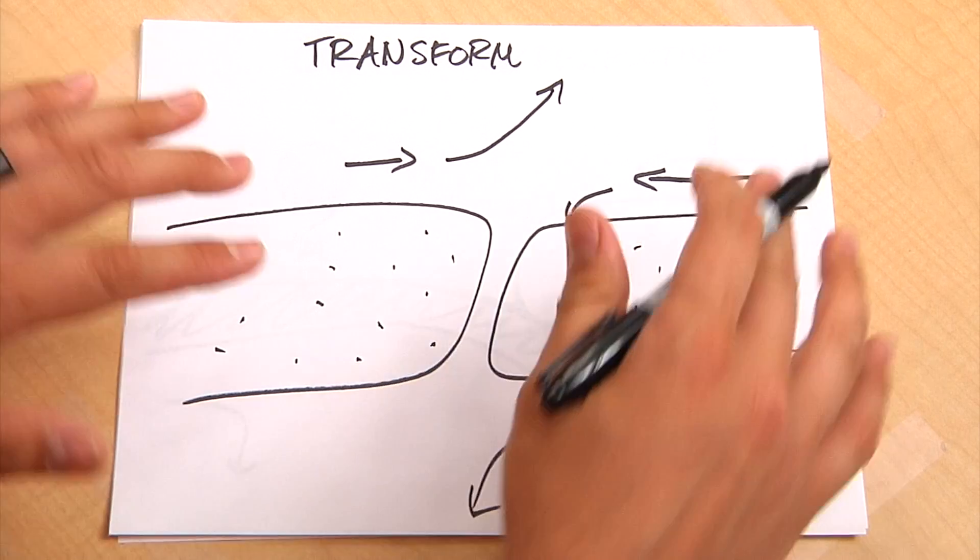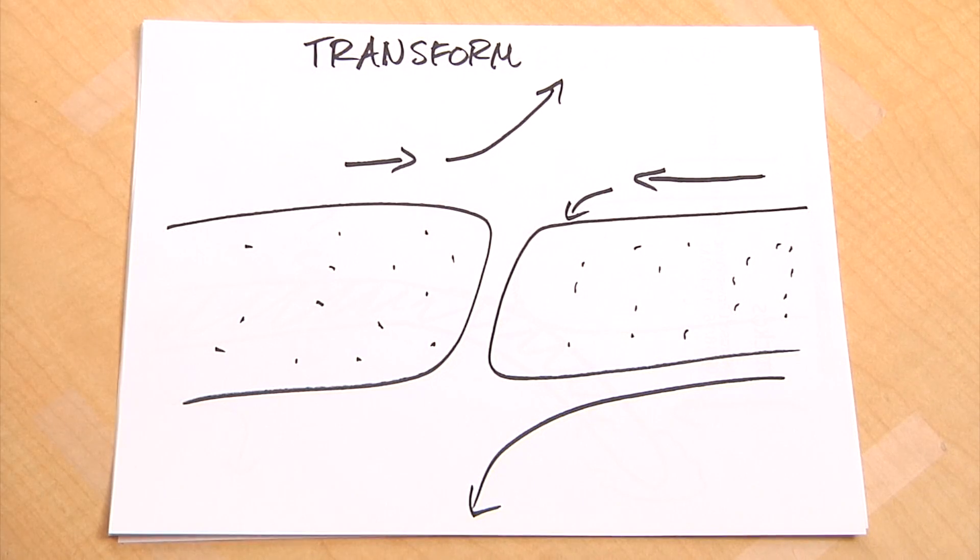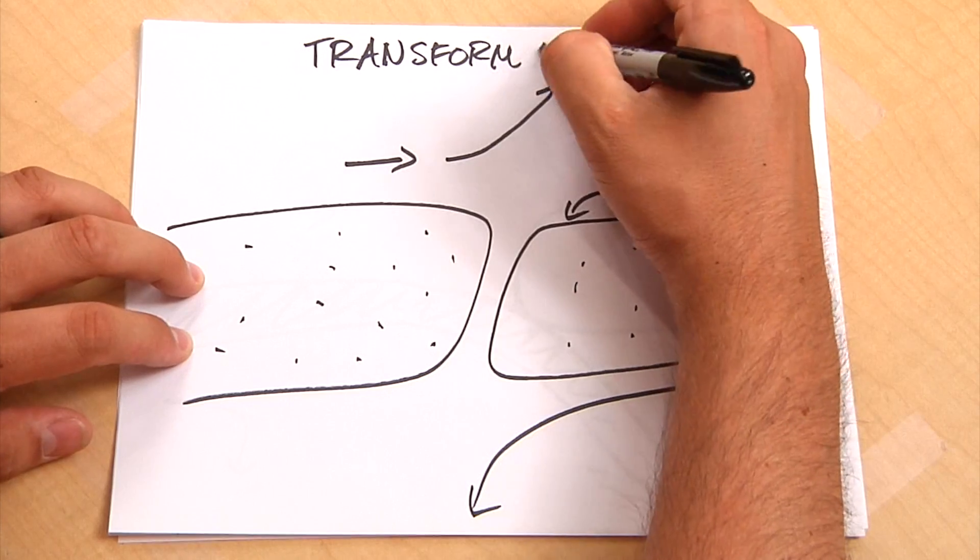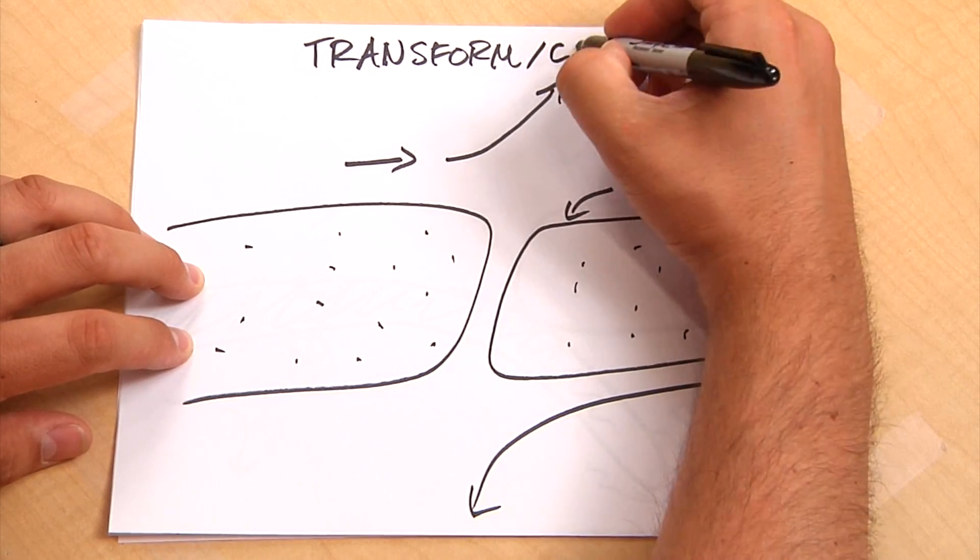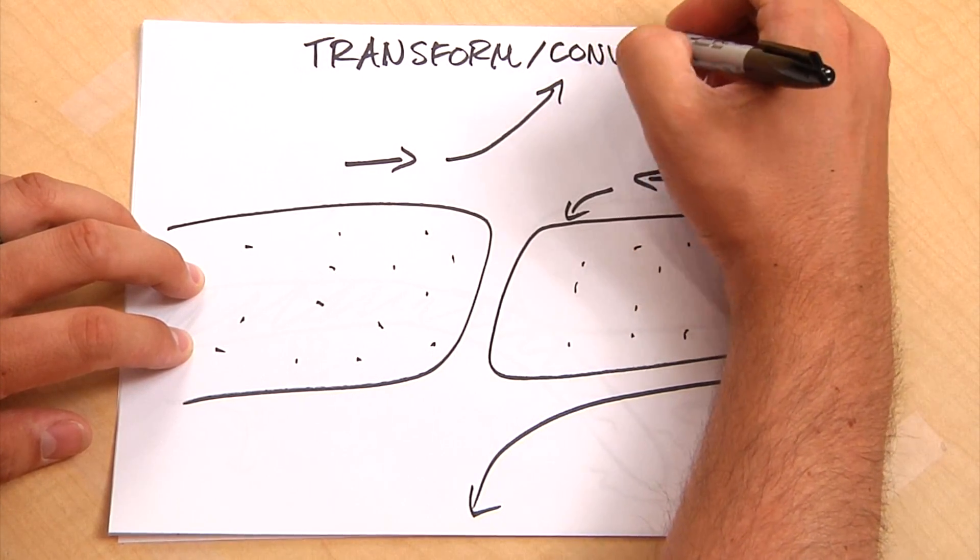And it creates, it's a transform fault, where neither one is moving on top of the other, no new material is being created. So it's not constructive or destructive, we call it a conservative, conservative plate boundary.